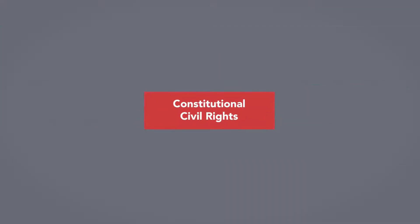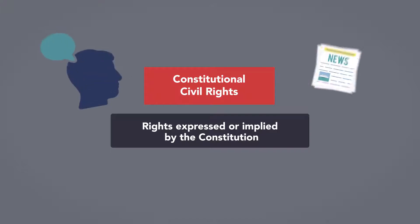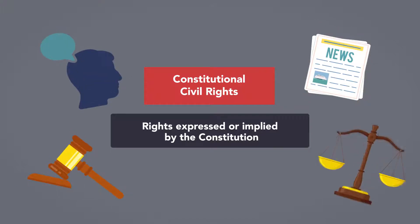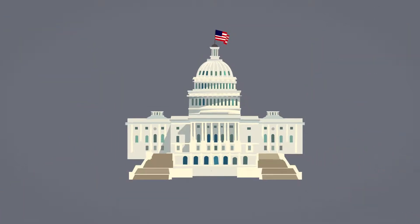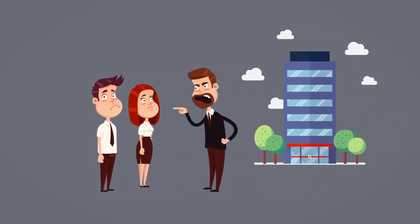Constitutional civil rights are those expressed or implied by the Constitution, such as freedoms of speech and the press, and the rights to due process and equal protection. These typically apply only to government action. For example, in most cases, a private company is under no obligation to allow its employees or customers freedom of speech.